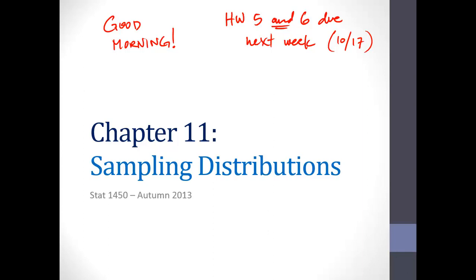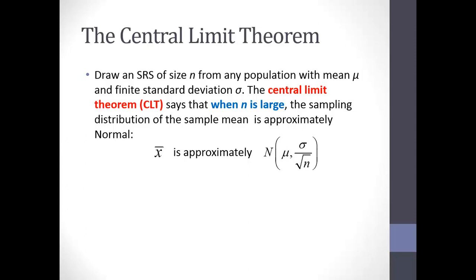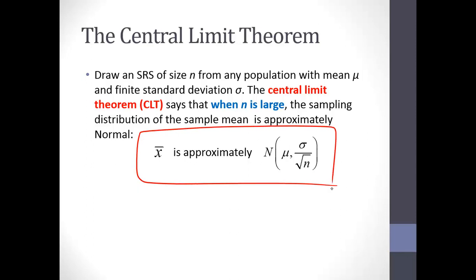We're going to finish up Chapter 11 today. Just wanted to remind you of the main point: we talked about the Central Limit Theorem, which says that if we have any distribution of whatever variable we're looking at, if the sample size is large enough and a few other conditions check out, then the sample mean from our sample is going to approximately follow a normal distribution with the correct mean and standard deviation sigma divided by the square root of n.